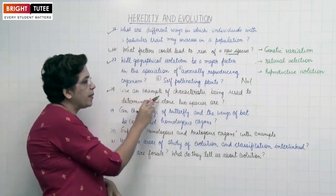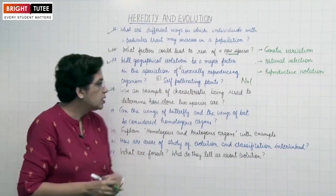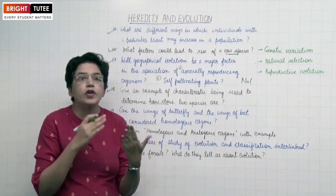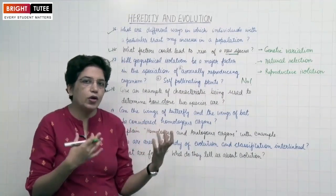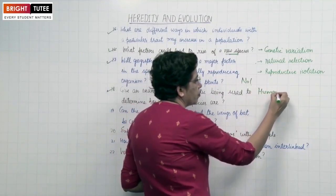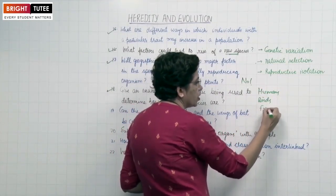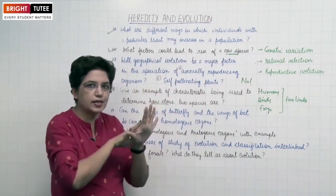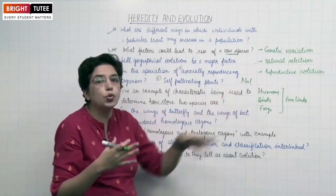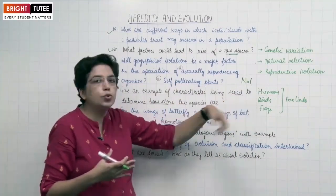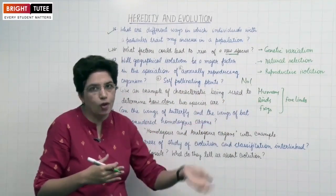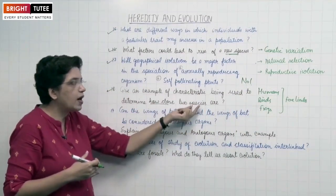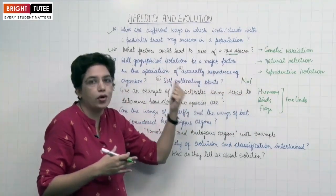Next question: Give one example of a characteristic used to determine how close two species are. The answer is homologous organs. For example, the forelimbs of humans, birds, and frogs — all three organisms have forelimbs that are structurally the same but used for different purposes. Humans use forelimbs to grasp things, birds use them to fly, and frogs use them to jump. Such characteristics tell us that these species are closely related and may have a common ancestral origin.